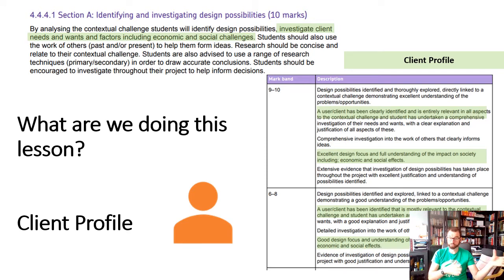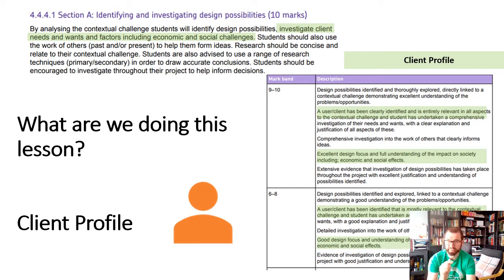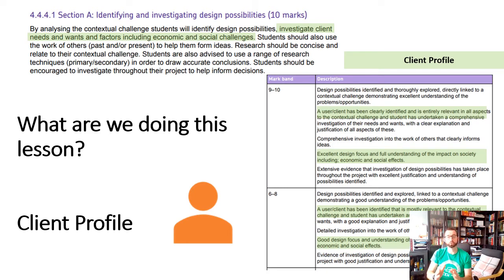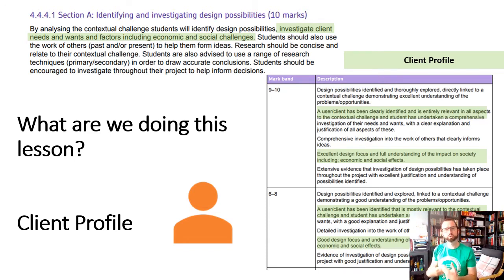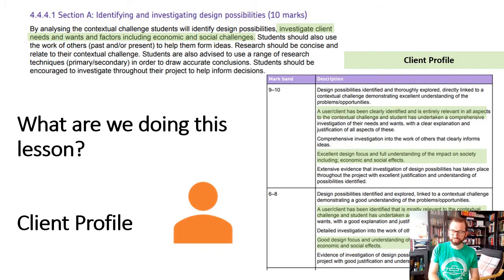This clearly links to the market research we did last week — you can't do this page unless you've done the market research, because that will really help. We'll identify who our client is specifically, and they need to link to your context. An example of a bad link would be if your grandparent is your client but your context is teenage lifestyles — it's unlikely your grandparent is a teenager. So if you're designing for nature and the environment, maybe your client works protecting nature. Or if you're designing for multifunctional living, you'd design for an adult or teenager wanting a multifunctional product, not a baby.